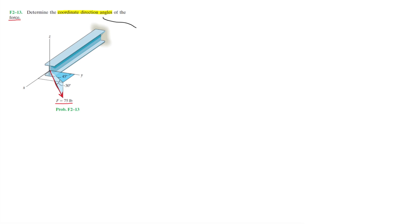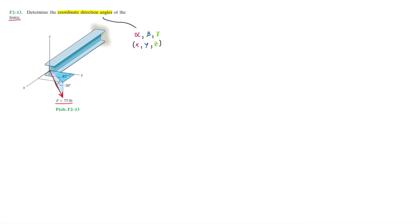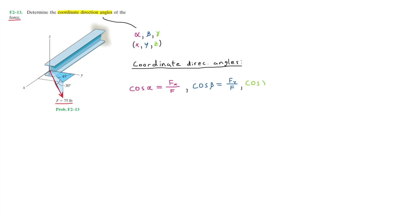Let's go ahead and define what our coordinate direction angles will look like. In general, there are three coordinate direction angles, basically one for each axis in our 3D plane. Those three will be the angle alpha, beta, and gamma, where each basically represents each axis — x, y, and z respectively. Each of these angles is represented by a set of trigonometric equations: cosine alpha equals Fx over F, cosine beta equals Fy over F, and cosine gamma equals Fz over F. These equations are basically formulated from projections off of each coordinate axis, hence the name coordinate direction angles.